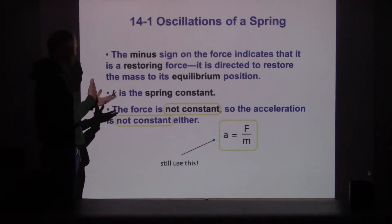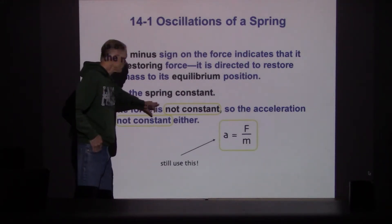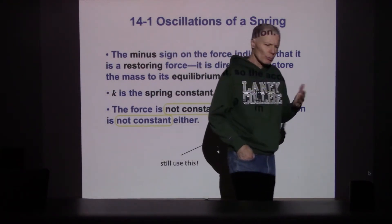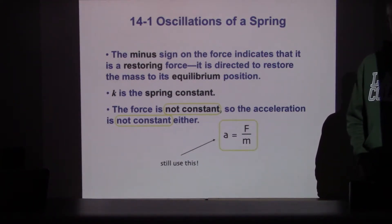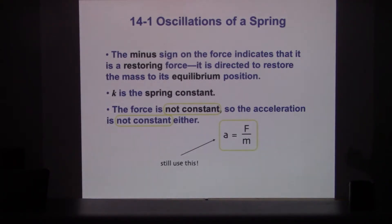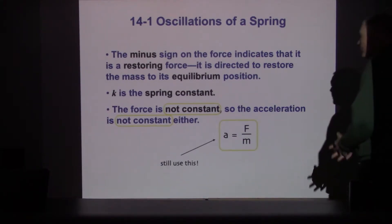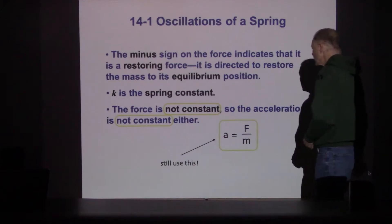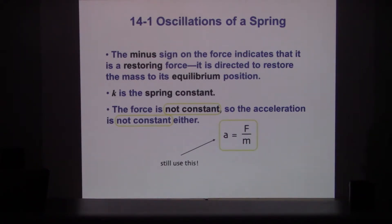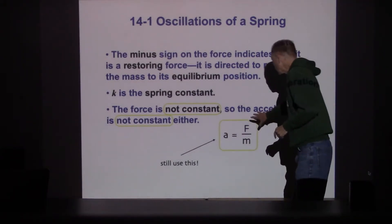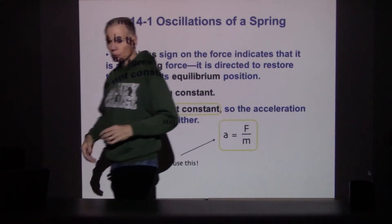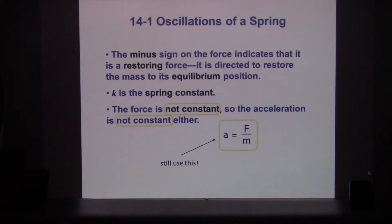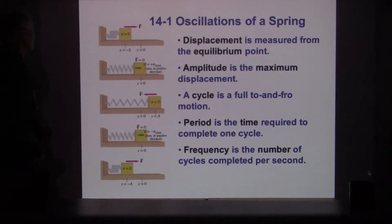To describe the motion, first note that the force is not constant. Back in chapters three, four, and five we had objects with constant acceleration and constant forces - this time we won't have either. The force is not constant, which means the acceleration will not be constant either. But we still have a = F/m at each instant of the motion, coming back to Newton's laws and making the connection between acceleration and force.